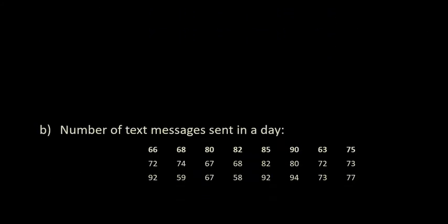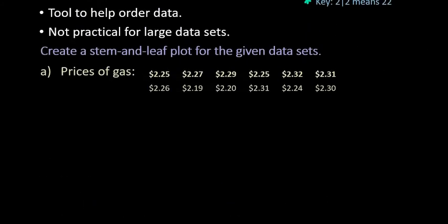I have a couple of examples here. I'm going to do the first one with you and then after I do the first one you can pause the video and try the second one on your own to make sure that you understand the content. With this one, notice that our data set is dollars, the price of gas: $2.25, $2.27, etc. We have our data set and if we look at it we can see that it is not in any kind of order.